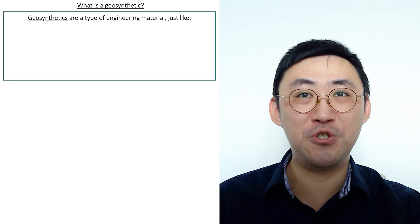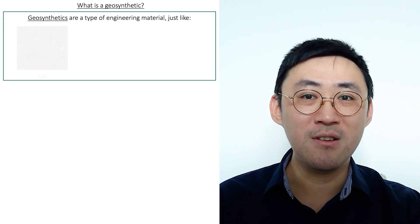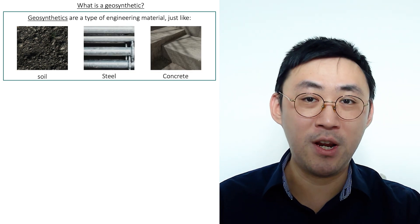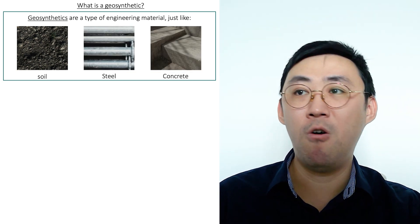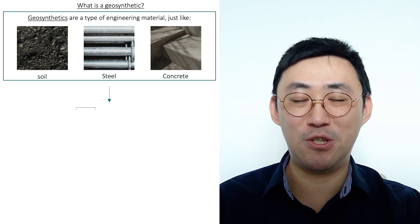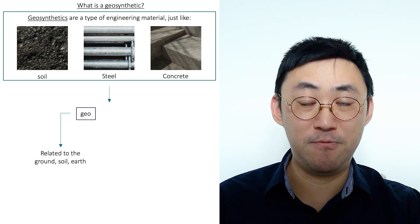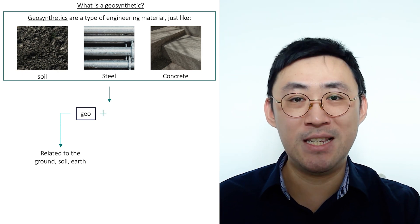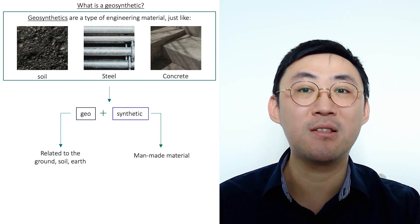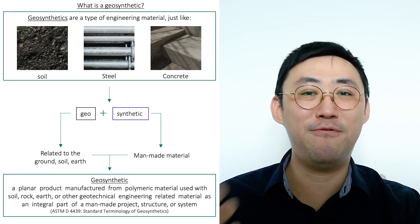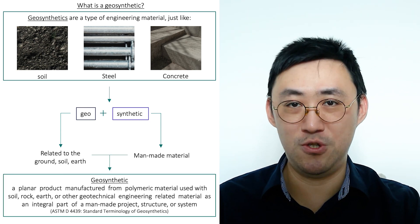What is geosynthetics? Geosynthetics is actually a type of engineering material, like how we use soil, steel, and concrete in our structures or any construction. The word geosynthetics can be split into two parts: geo, which is related to ground, soil, and earth; and synthetic, which literally means man-made materials. Putting these two words together forms the word geosynthetics.